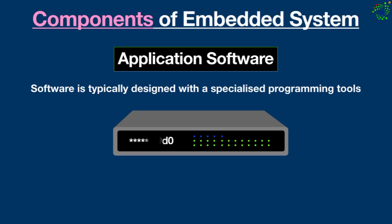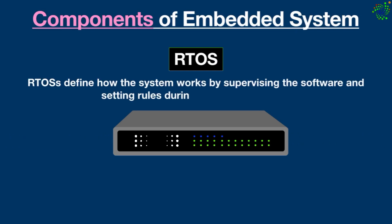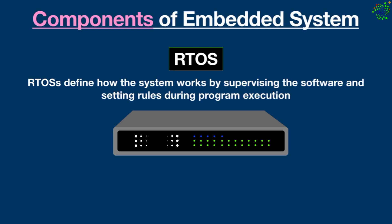Third, real-time operating systems — these are not always included in embedded systems, especially smaller-scale ones. Real-time operating systems define how the system works by supervising the software and setting rules during program execution. They act as an interface between hardware and software, managing the application software. All these components work together to perform specific tasks, relying on microprocessors, microcontrollers, memory, input/output and communication interfaces, and a power supply to function.